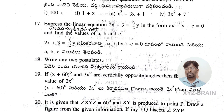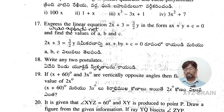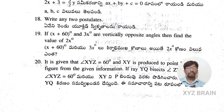Question 18: write any two postulates of Euclid. Question 19: if (x + 60°) and (3x)° are vertically opposite angles, then find the value of (2x)°.